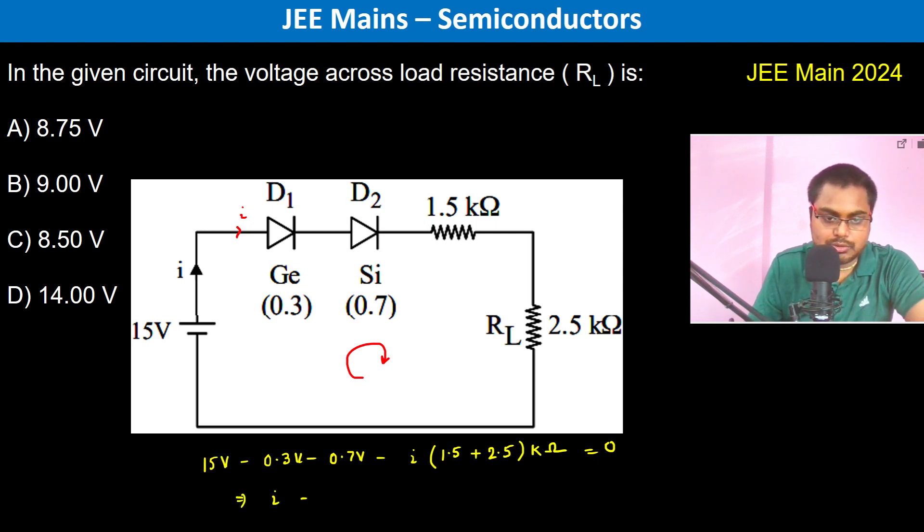Therefore I is going to be 14 divided by 4 into 10 to the power minus 3 ampere. Now this is 3.5 milliampere. Now the question is the voltage across the load resistance.